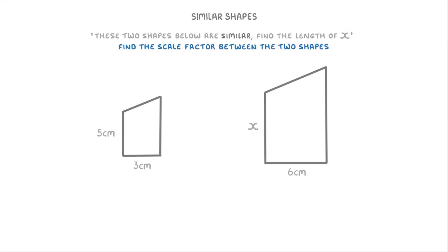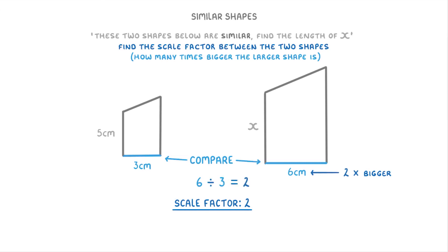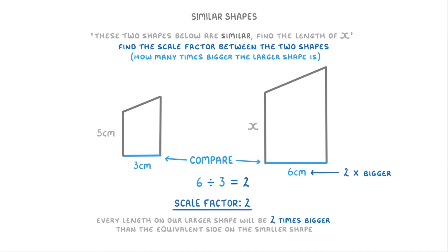The key to questions like this is to find the scale factor between the two shapes, which is basically how many times bigger the larger shape is than the smaller shape. To find it, we just compare two equivalent sides like these two bottom sides and find how many times bigger the larger one is than the smaller one. Because six centimeters is two times bigger than three centimeters, the scale factor here is two. You could also just divide the larger length of six by the smaller length of three, which gives you two.